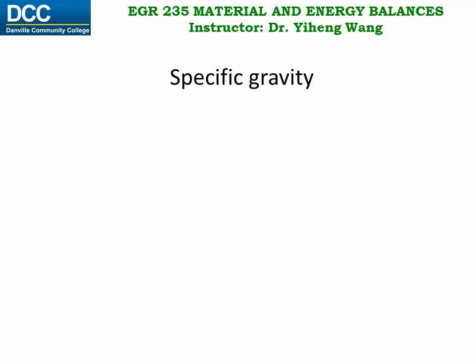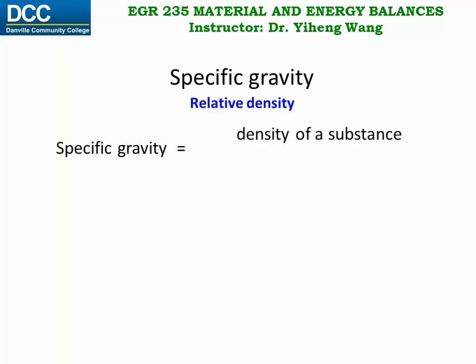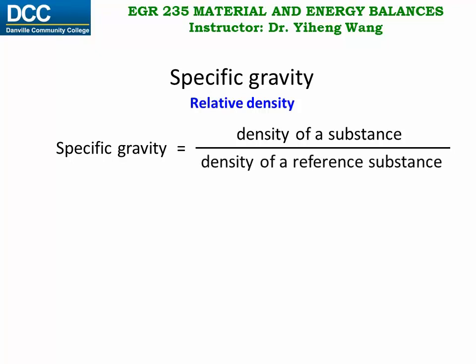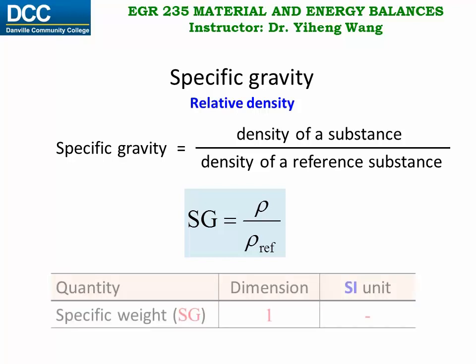Specific gravity can be very easily confused with specific weight or even specific volume. But specific gravity is actually a relative density, because it is defined as the density of a substance divided by the density of a reference substance: SG equals rho over rho-reference. So as you can see, it is a ratio, therefore it is dimensionless — its dimension is pure number one — and it is unitless as well.